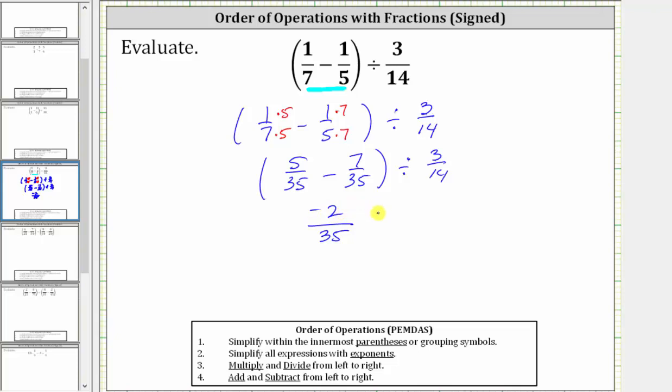We now have -2/35 divided by 3/14. Dividing by a fraction is the equivalence to multiplying by the reciprocal, which means dividing by 3/14 is the equivalence to multiplying by 14/3.